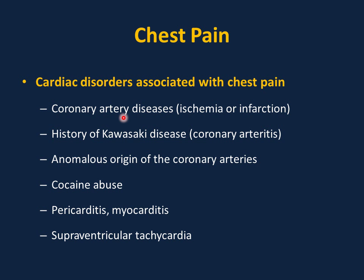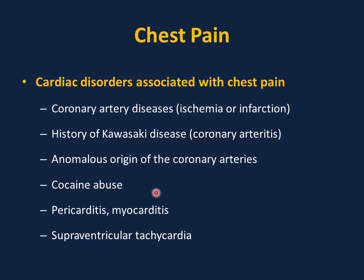Cardiac disorders associated with chest pain: coronary artery disease is rare in children but can be seen in familial hypercholesterolemia, especially the homozygous type, causing premature coronary artery disease with ischemia or infarction. History of Kawasaki disease is important to ask about, as it can cause coronary arteritis or aneurysm. Anomalous origin of coronary arteries is a very important cause of sudden death in athletes, and can present even in infancy with poor feeding and fatigability, or during childhood with exertional chest pain. Cocaine abuse can also cause chest pain.